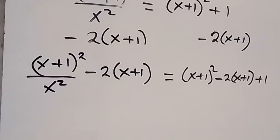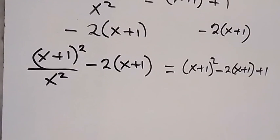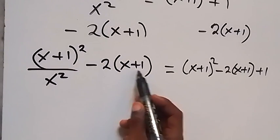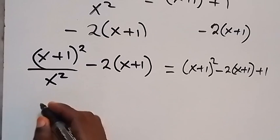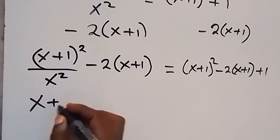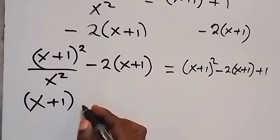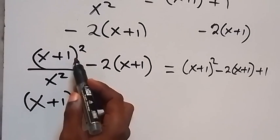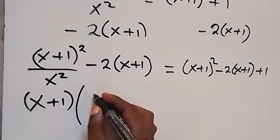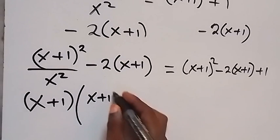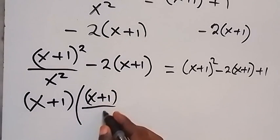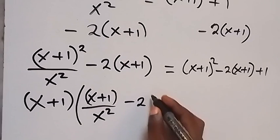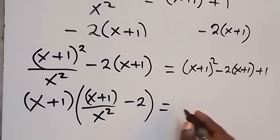So, what we have next — the next step — we have x plus 1 times x plus 1. Let's take one of them out. So, we have x plus 1 factored out, then inside the bracket, remain one of the x plus 1 here: that's x plus 1 over x squared, then minus 2.